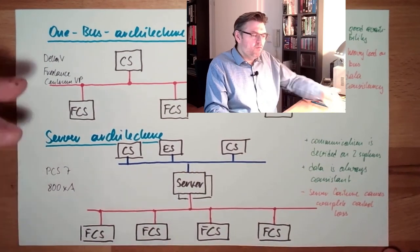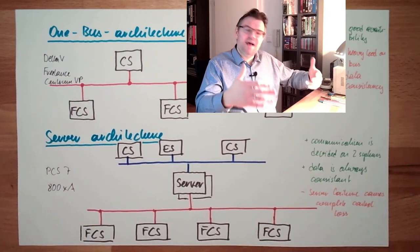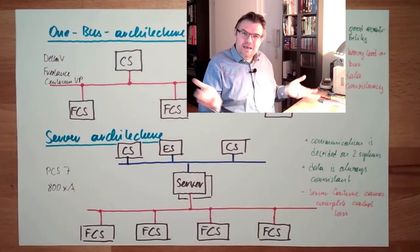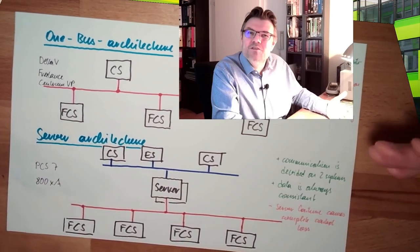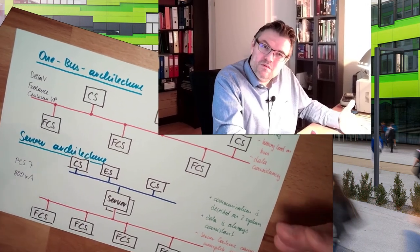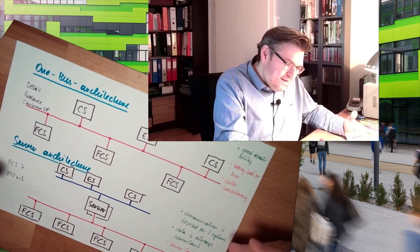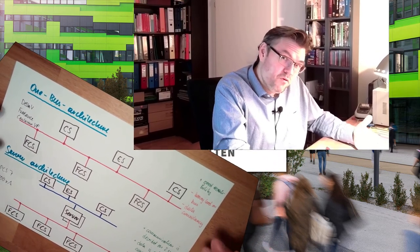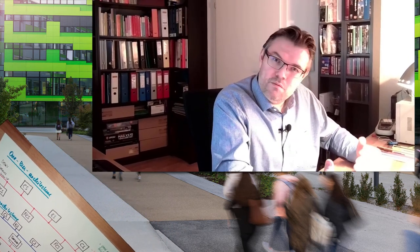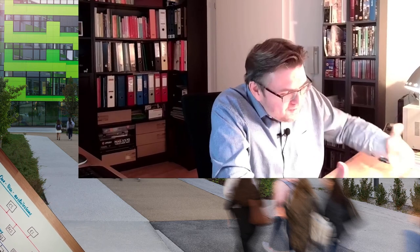Some companies offer both, and some have perfected or excelled with one approach. In the end, it's just about selecting what's best for your application. If you really fear that the bus will be overwhelmed, go with the server architecture. If you fear the server can block the whole thing, go with the one bus architecture. Adapt to the application — like always.